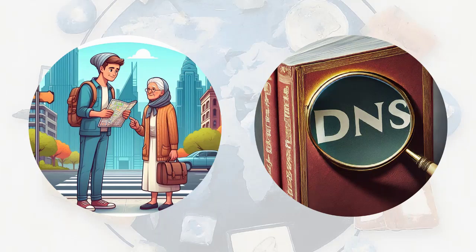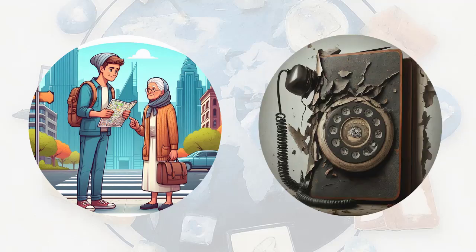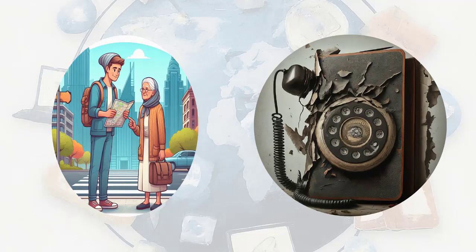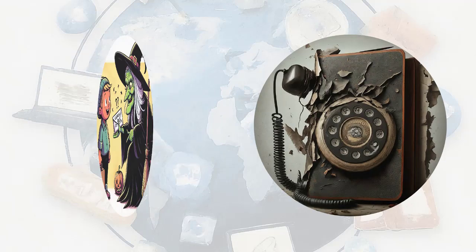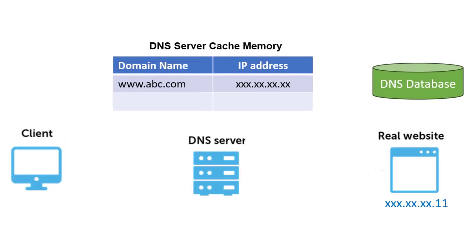DNS cache poisoning is a cyber attack where hackers trick the DNS server into giving out the wrong information. Imagine someone with malicious intent rewriting phone numbers in the phone book to send you to the wrong address.